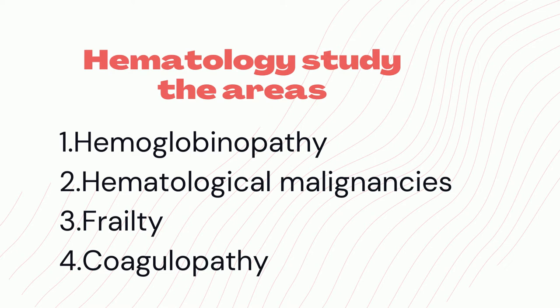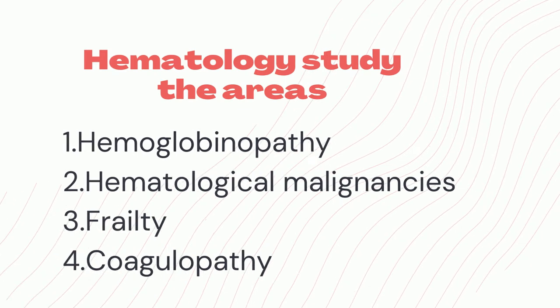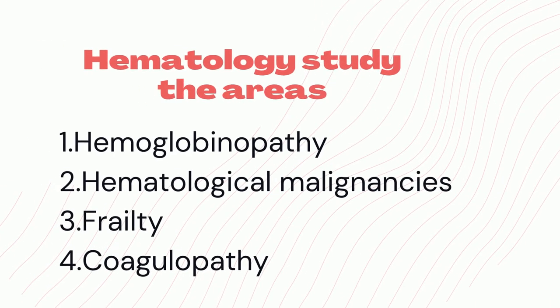The area of hematological malignancies is concerned with the diagnosis and therapy of tumors of the bone marrow, blood, and lymph nodes. Myeloma is one kind of hematological malignancy, along with leukemia and lymphoma. Other problems treated by a hematologist include arterial thromboembolism, deep vein thrombosis, and neutropenia.